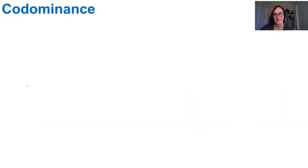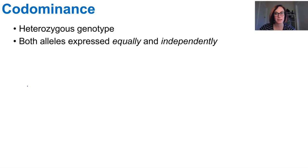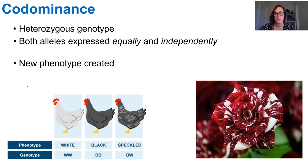In codominant inheritance, if two alleles are inherited, so we're talking the heterozygous genotype, then both of them can be expressed equally and independently. This means that heterozygous combinations of alleles create a new phenotype that doesn't quite fit the standard dominant or recessive category. There are heaps of examples of this. We're going to look at two specific ones.